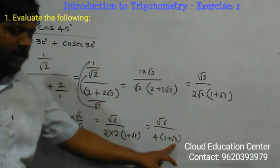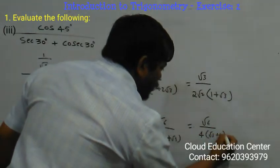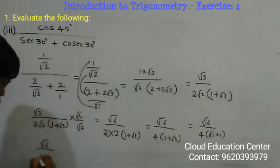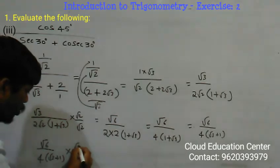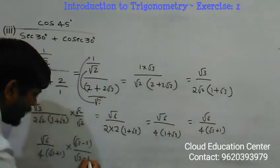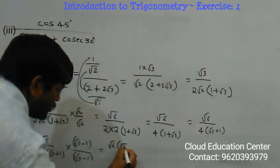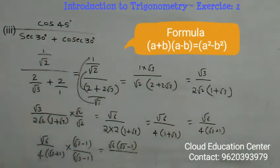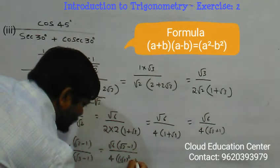It is equal to root 6 over 4, and 1 plus root 3, which you can write as root 3 plus 1. Now it is root 6 by 4 into root 3 plus 1. Since the denominator has root 3 plus 1, rationalize it again by multiplying by root 3 minus 1 over root 3 minus 1. Using (a+b)(a-b) = a squared minus b squared, it is 4 into root 3 squared minus 1 squared.